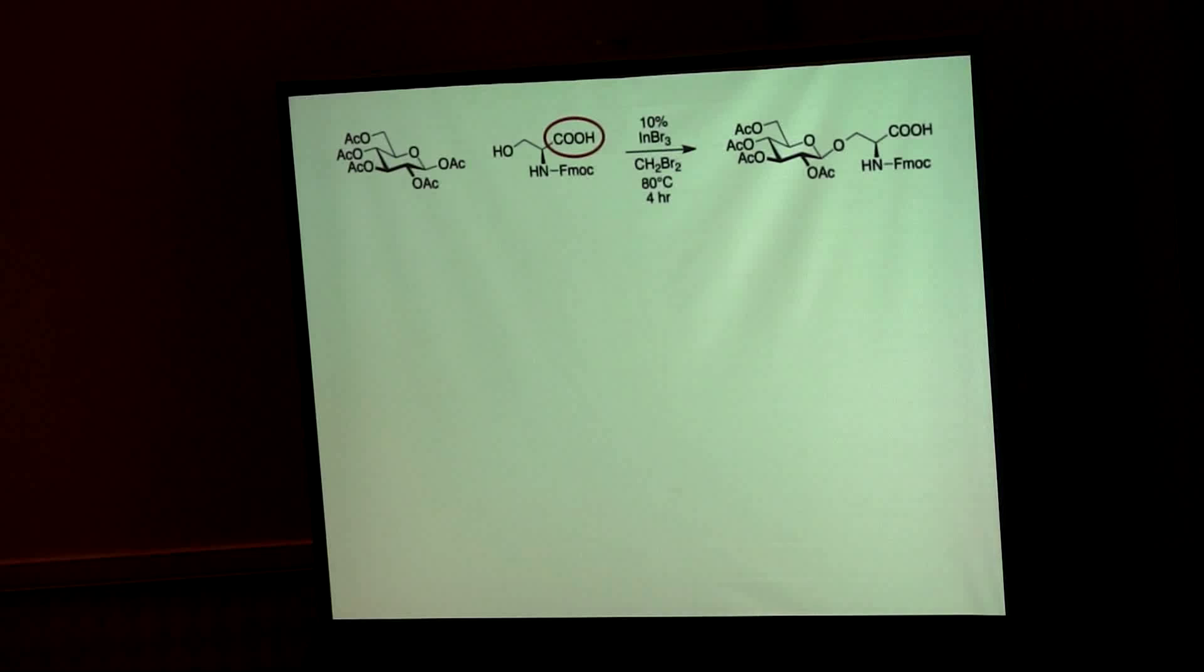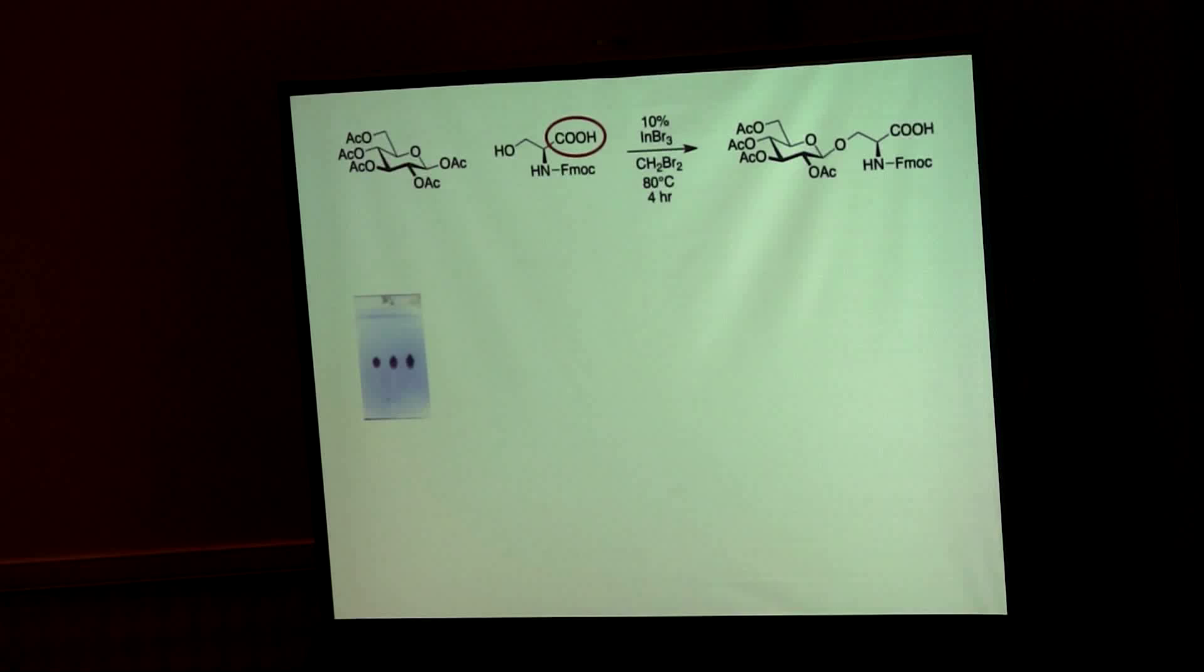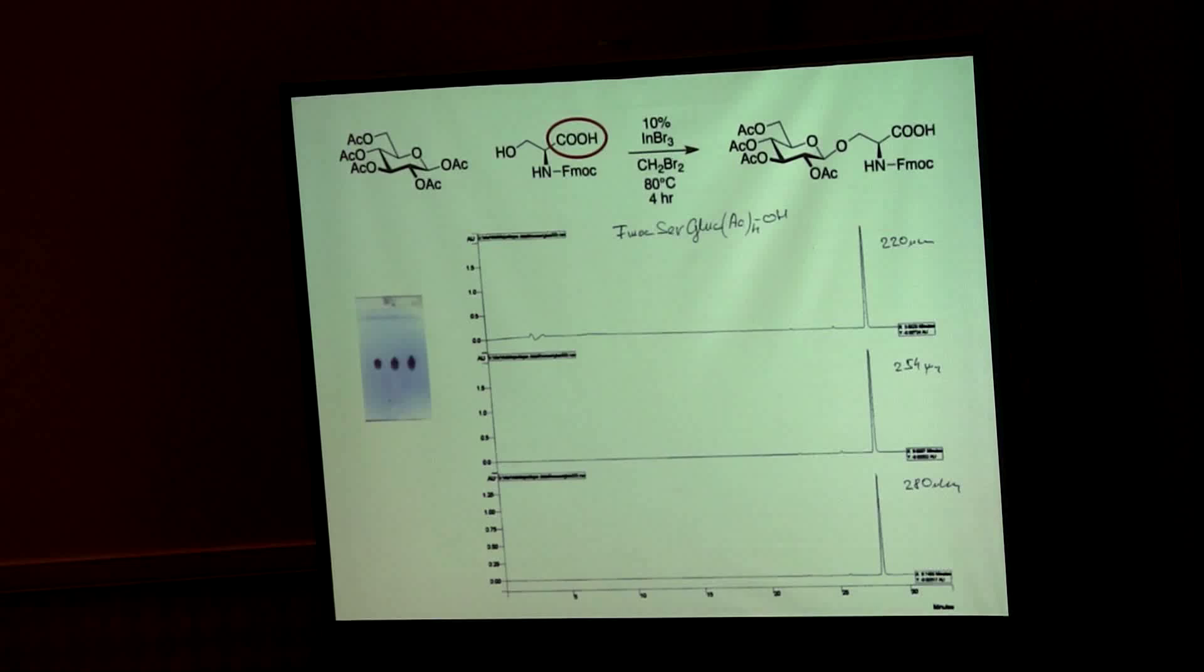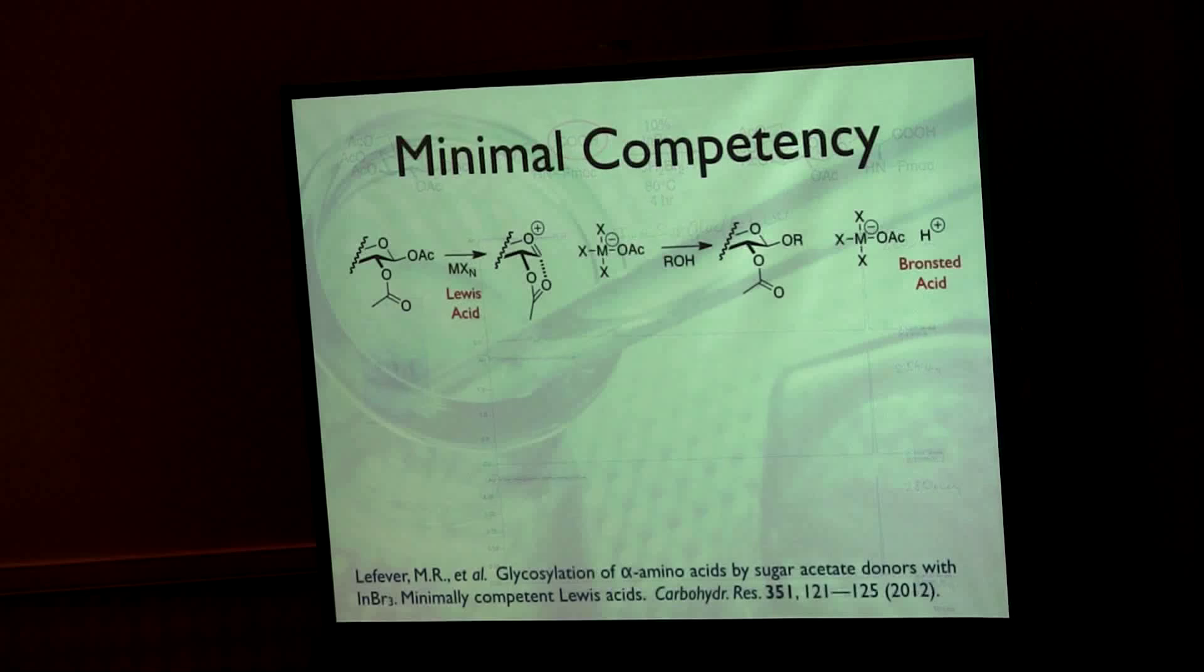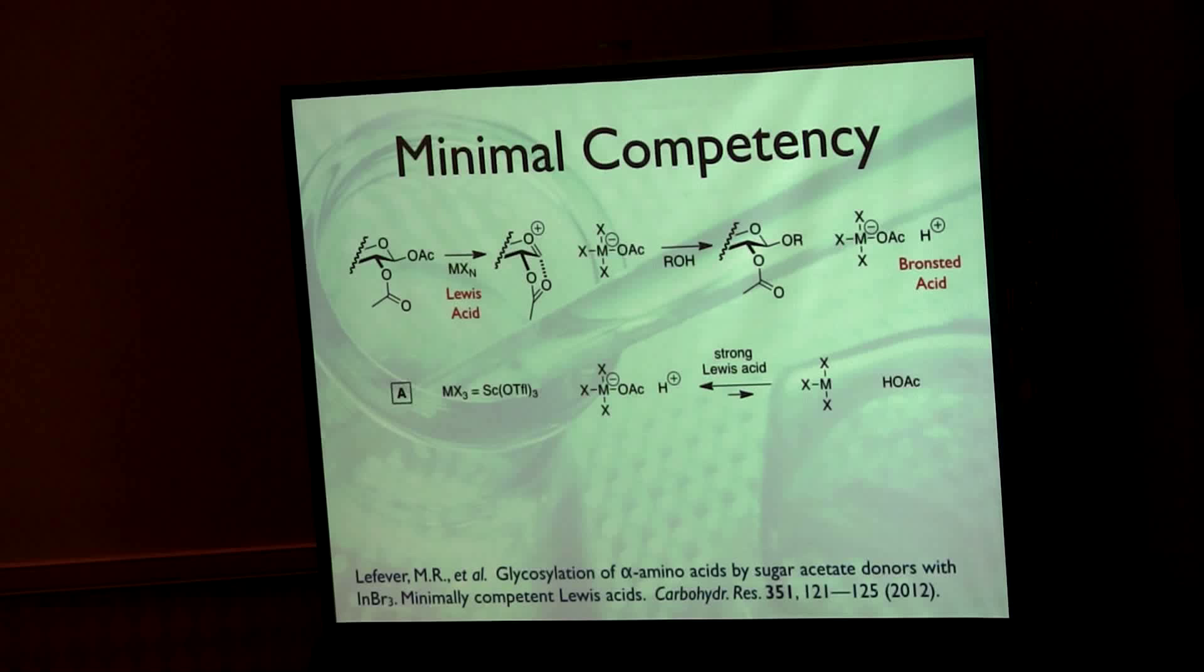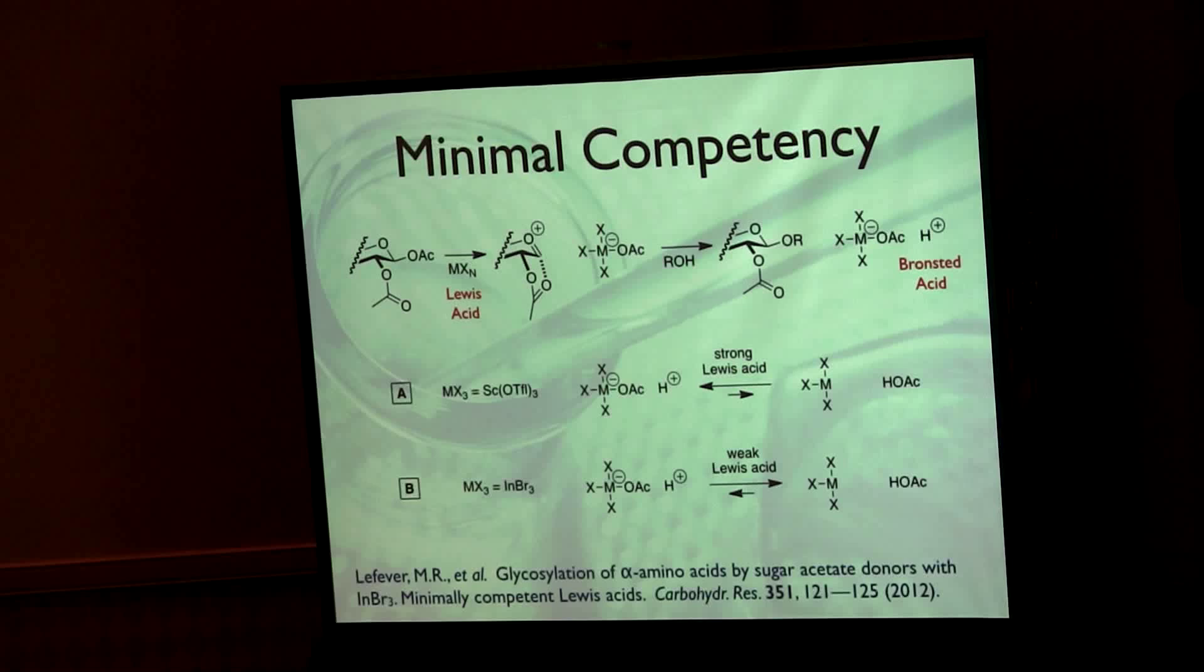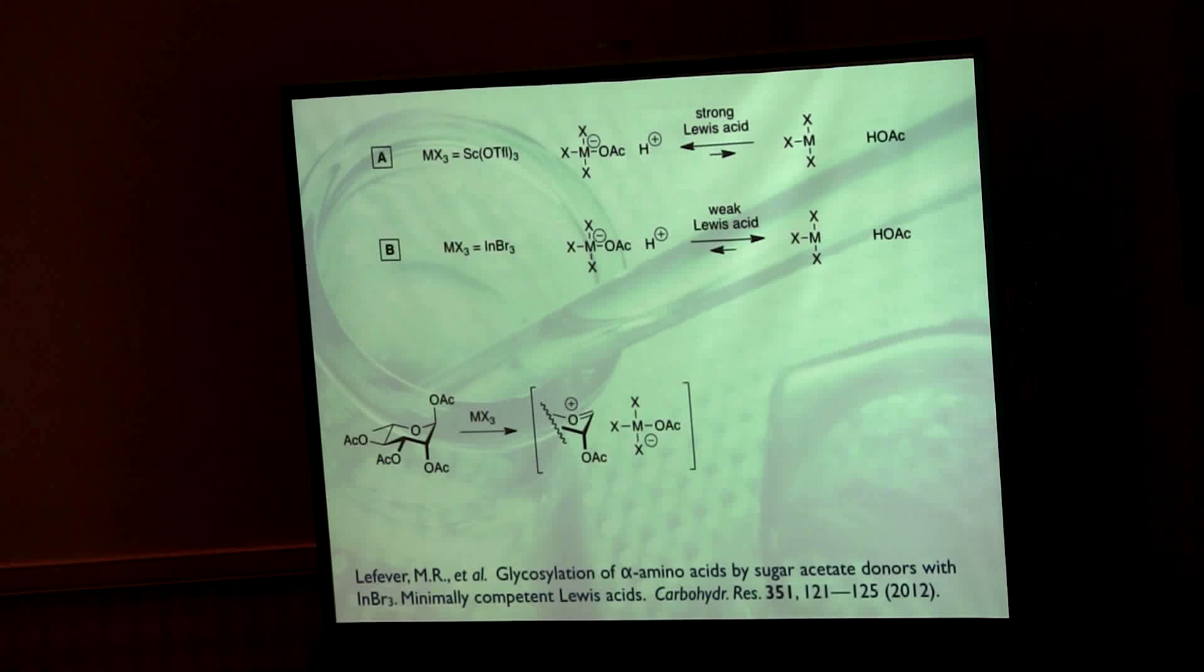So here you can see, if we go a step further in our step towards minimalism, if we remove the ester group here, we can actually get very nice yields of the desired product here. This compound can be isolated without any chromatography—just a simple extraction and crystallization. I wouldn't call it crystallization; precipitation would probably be the right way to think about this. So this notion of minimal competency: what are we really saying here? Well, if you have a very strong Lewis acid, it's going to hold on to that acetate. You're going to generate something that's equivalent to a mineral acid.